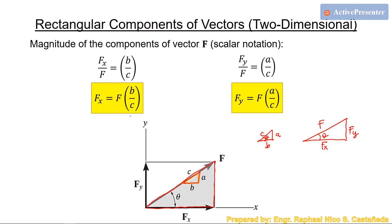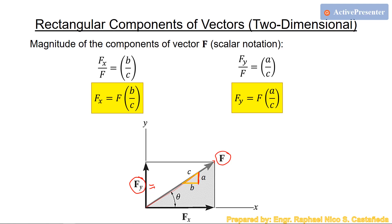So Fx = F·(b/c) and Fy = F·(a/c). An easy way to remember this: for Fy, multiply F by the side parallel to Fy (which is a), then divide by the hypotenuse c. The same principles apply when a component is negative because its direction opposes the axis.